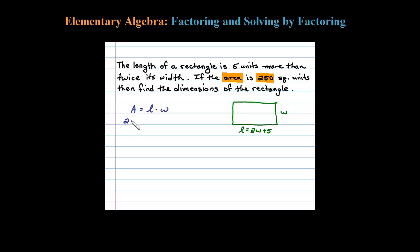So let's substitute that value in for A: 250. Now L is 2W plus 5, so 2W plus 5 times the width. The area equals length times width, so here we have an equation with one variable.